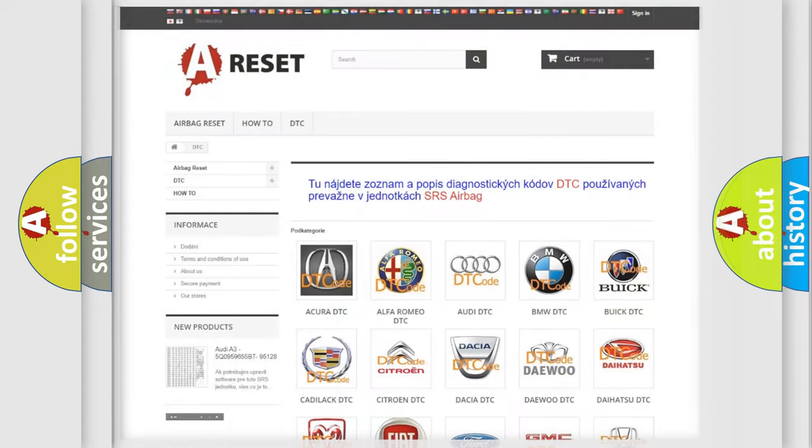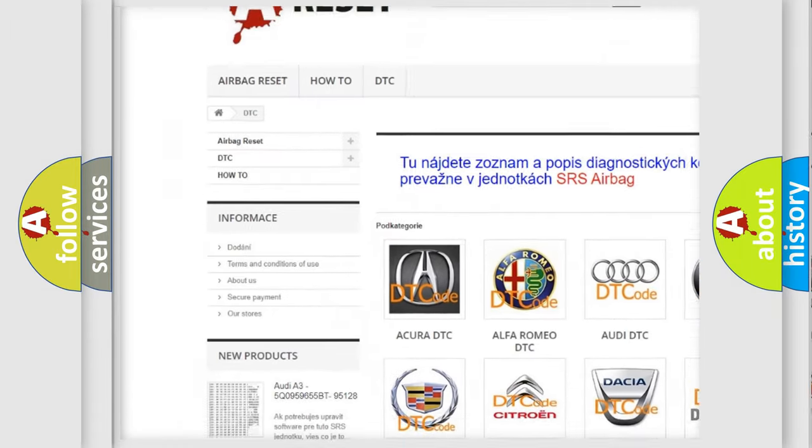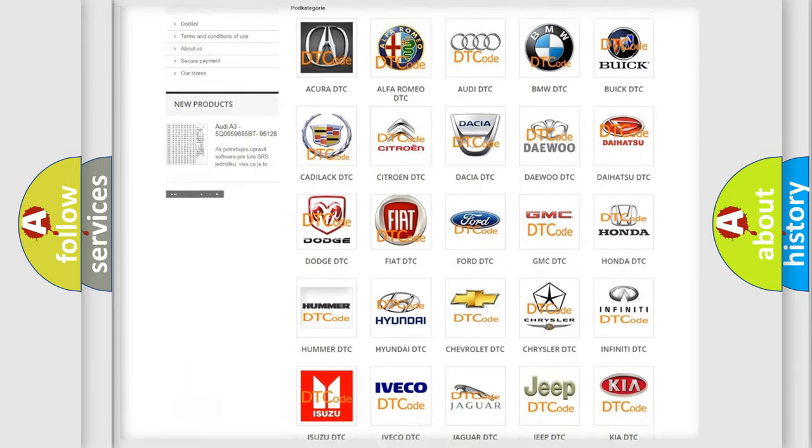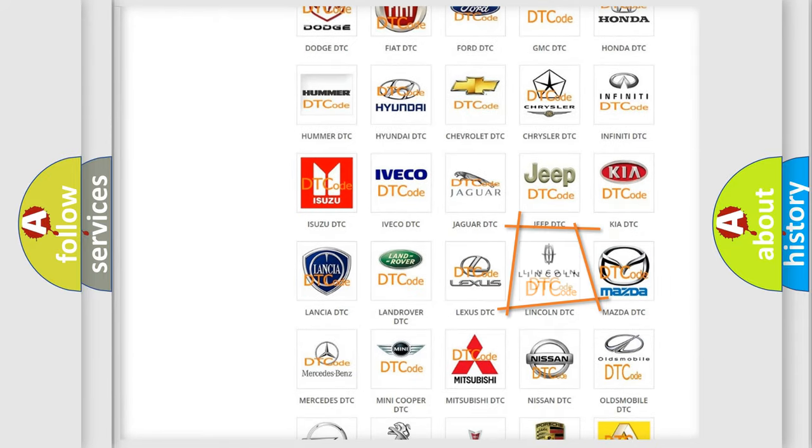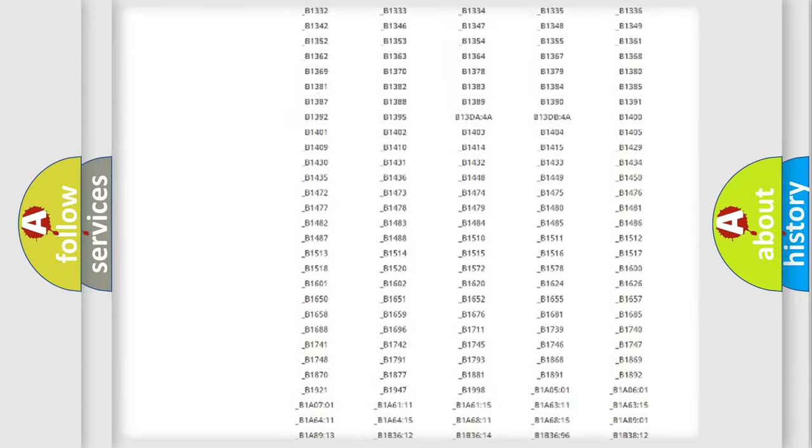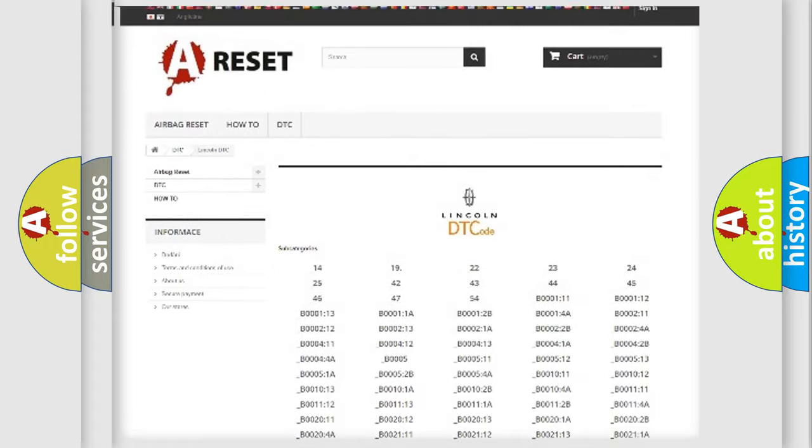Our website airbagreset.sk produces useful videos for you. You do not have to go through the OBD2 protocol anymore to know how to troubleshoot any car breakdown. You will find all the diagnostic codes that can be diagnosed in linked vehicles.